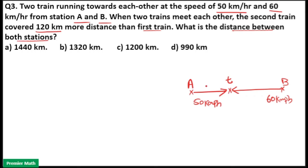So if I take the distance covered by the first train as D, the second train will cover D plus 120 km.